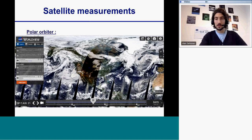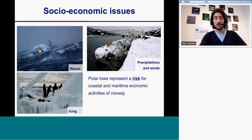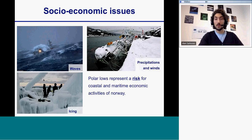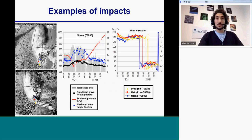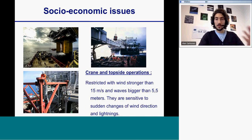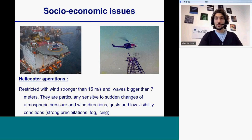I will briefly explain the socio-economic issues linked with polar lows, showing examples of the risks they represent for coastal and maritime economic activities in Norway mainly. We will also see some examples of impacts measured at weather stations. I will finish this part with some facts about the oil industry and oil platforms, giving examples of specific operations on the platforms that can suffer a polar low impact, as they are very sensitive to changes in atmospheric conditions.